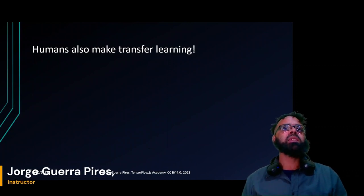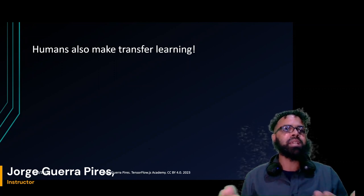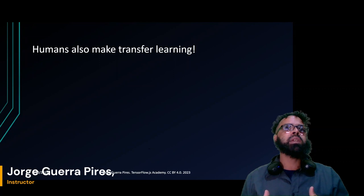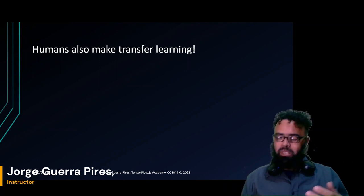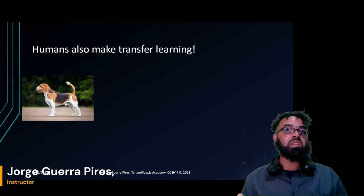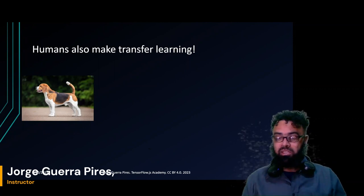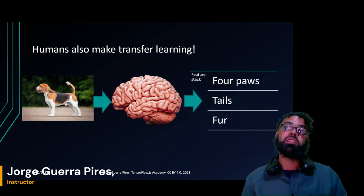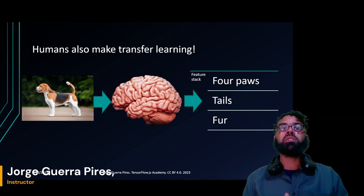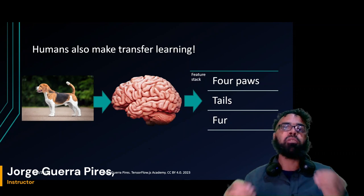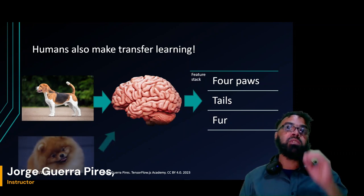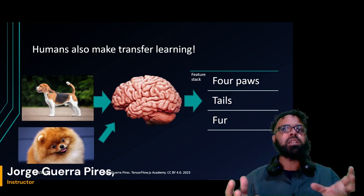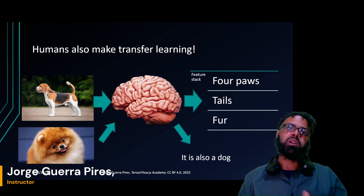One thing to keep in mind is that humans also do transfer learning. If you think metaphorically and make an analogy: when you see a dog, your brain extracts a couple of features — the dog can bark, it has four paws, a tail, fur, and so on. Your brain builds a feature stack, so whenever you see another dog, even if it looks a little different, you can still identify it because it shares those same features.